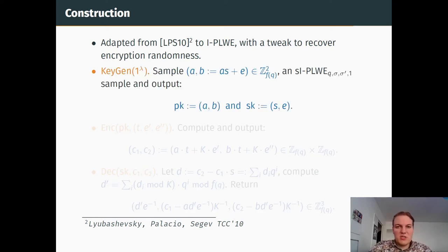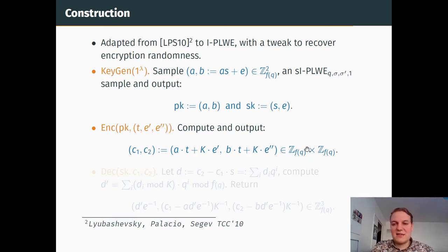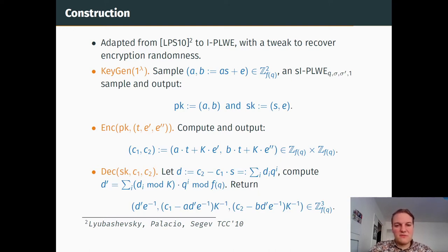The keygen is pretty simple. We generate an SIPLWE sample and use it as public key, and keep the noise and the secret as secret key. Then to encrypt, we compute the following quantity where the message is t, e prime, e second. In the following, we will need to assume for correctness that f(q) is prime. When we have recovered t, since a, b, and k are all public, it then becomes easy to recover e prime and e second.